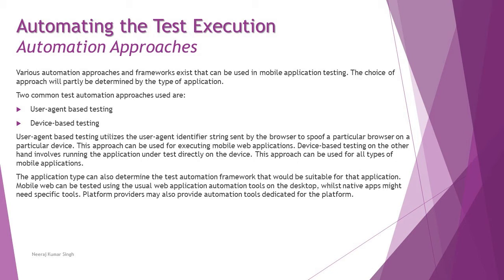The key understanding from comparing these two approaches is: for a web-based application within a mobile — a browser-based mobile application — you can make use of user agent based testing, where a user connects to a particular agent and retrieves information through a browser interface. But when it comes to device based testing, it's directly an app installed on the device — native applications — where you can directly interact with and test them. These two standard approaches can be well utilized for automating mobile-based testing.